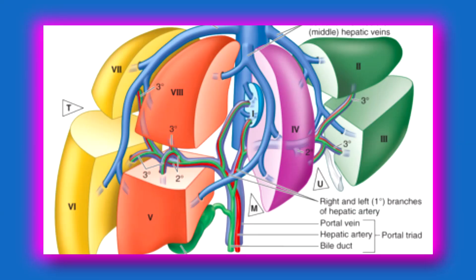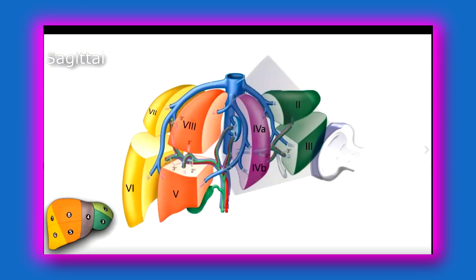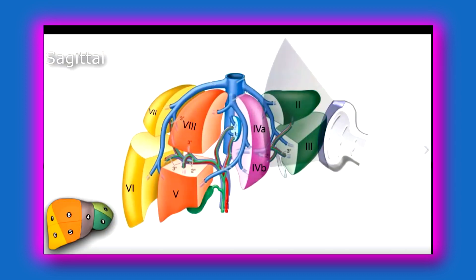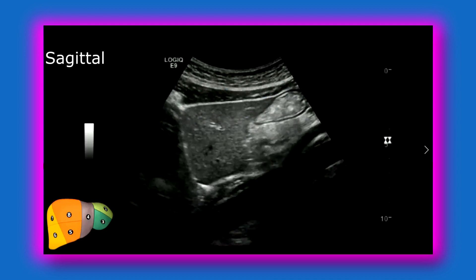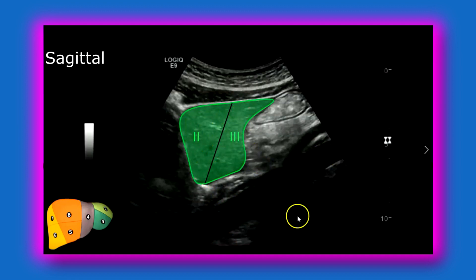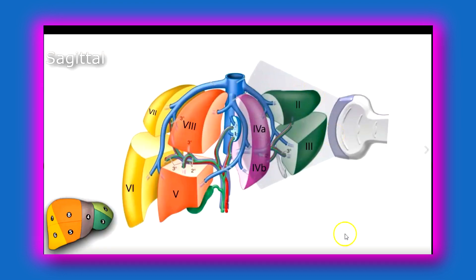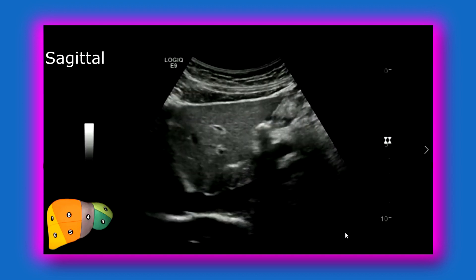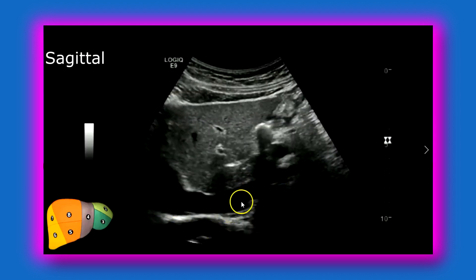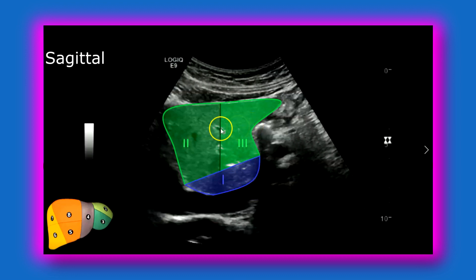Now let's look at some ultrasound views beginning with sagittal. You've got your probe there on segments 2 and 3. Here you have your aorta, with superior segment 2 and inferior segment 3 in sagittal. Moving more laterally, you have your IVC, segment 1, and again segment 3 and segment 2.